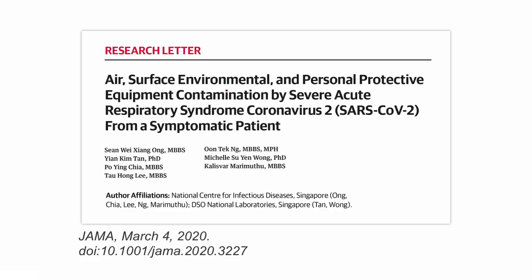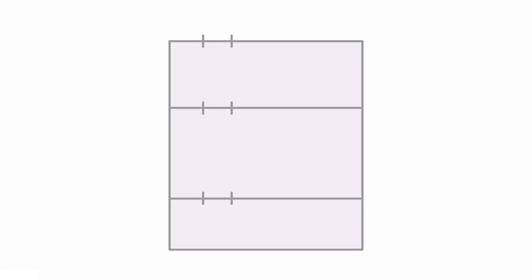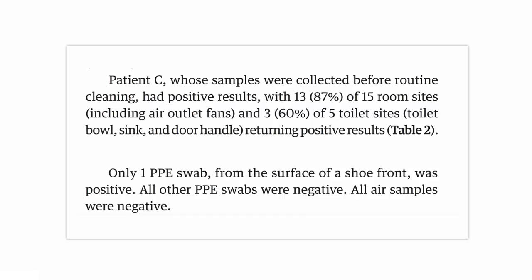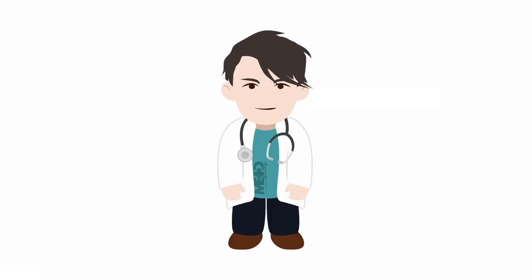Similar findings were reported by authors who performed air and surface samples of three COVID-19 patients in Singapore, with samples taken in the patient's room, the anteroom, and the bathrooms. Samples from patients A and B were taken after cleaning and were all negative. For patient C, whose samples were collected before routine cleaning, 13 out of 15 room sites (87%) tested positive and 3 out of 5 toilet sites (60%) tested positive for the virus. The fact that air exhaust outlets tested positive suggests that small virus-laden droplets were displaced and landed there. Importantly, all of these studies looked at viral RNA or viral particles, but we don't know if these particles were still viable and able to infect humans.